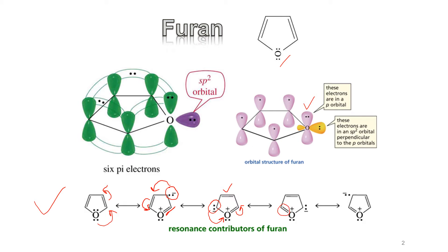A new bond is formed between the two carbons, and due to delocalization of pi electrons, furan forms four resonance contributors. Because of this delocalization, positions 2, 3, 4, and 5 of furan become electron rich, and that is why an electrophile can easily attack any of these four positions.